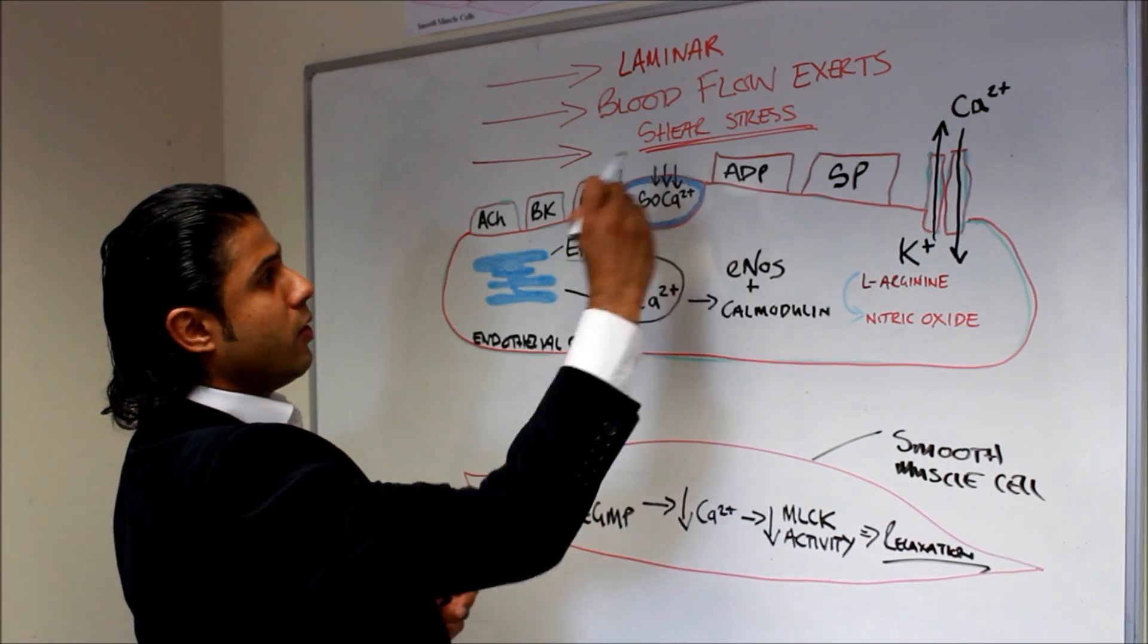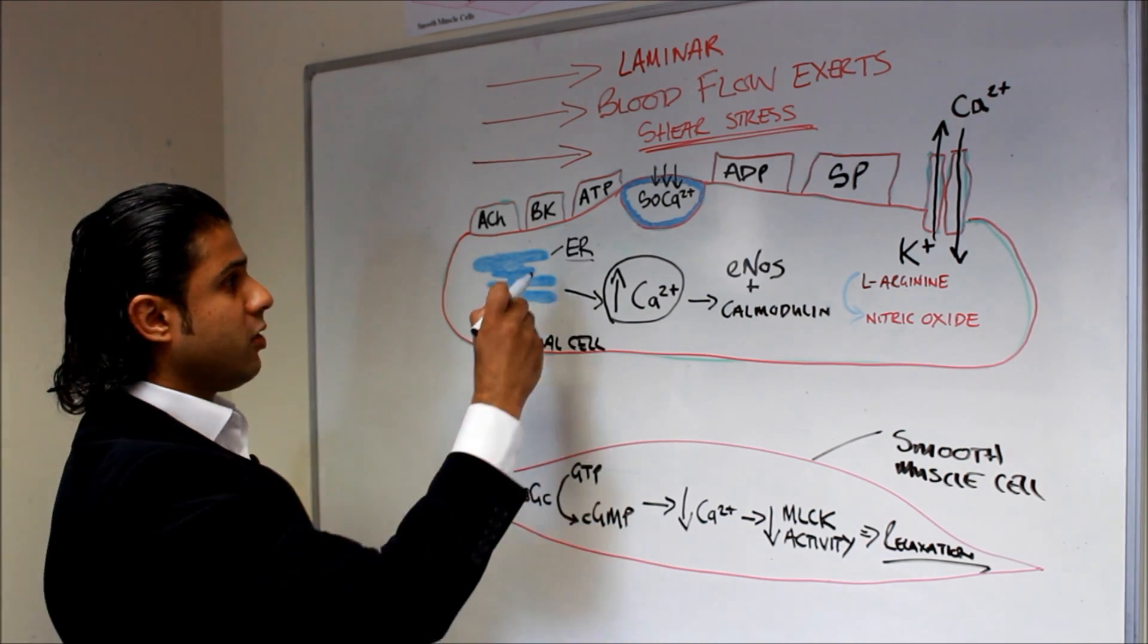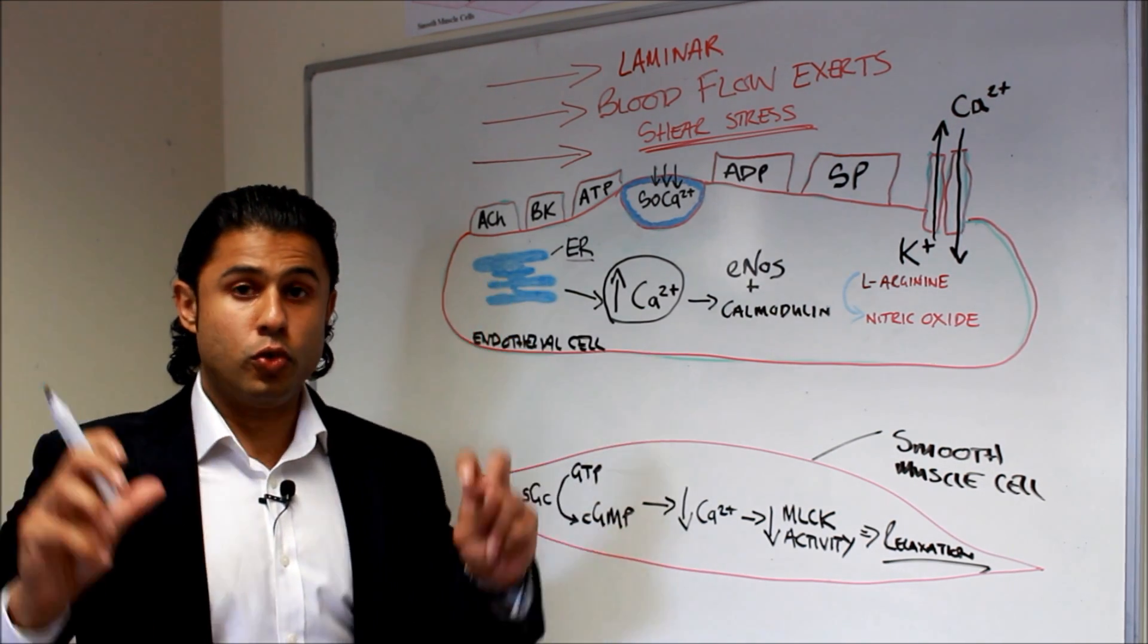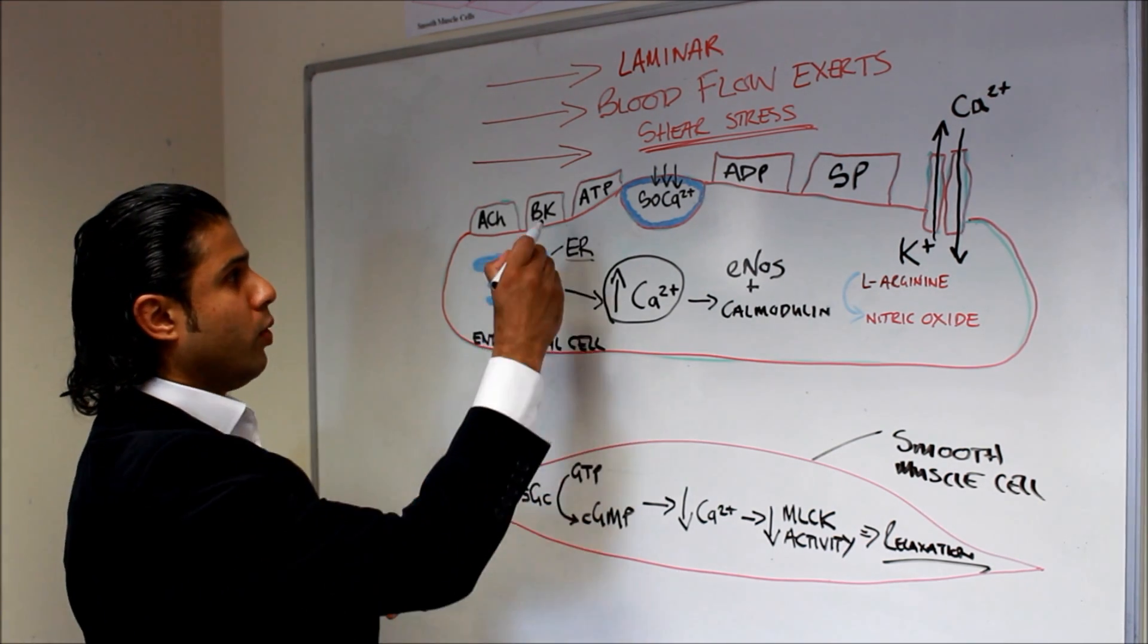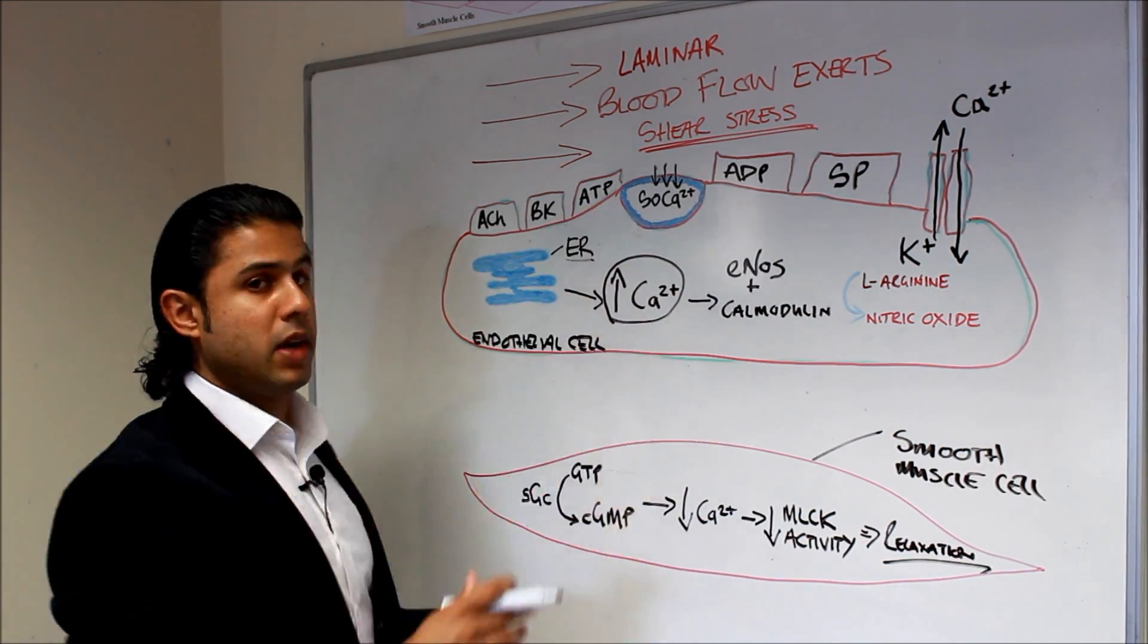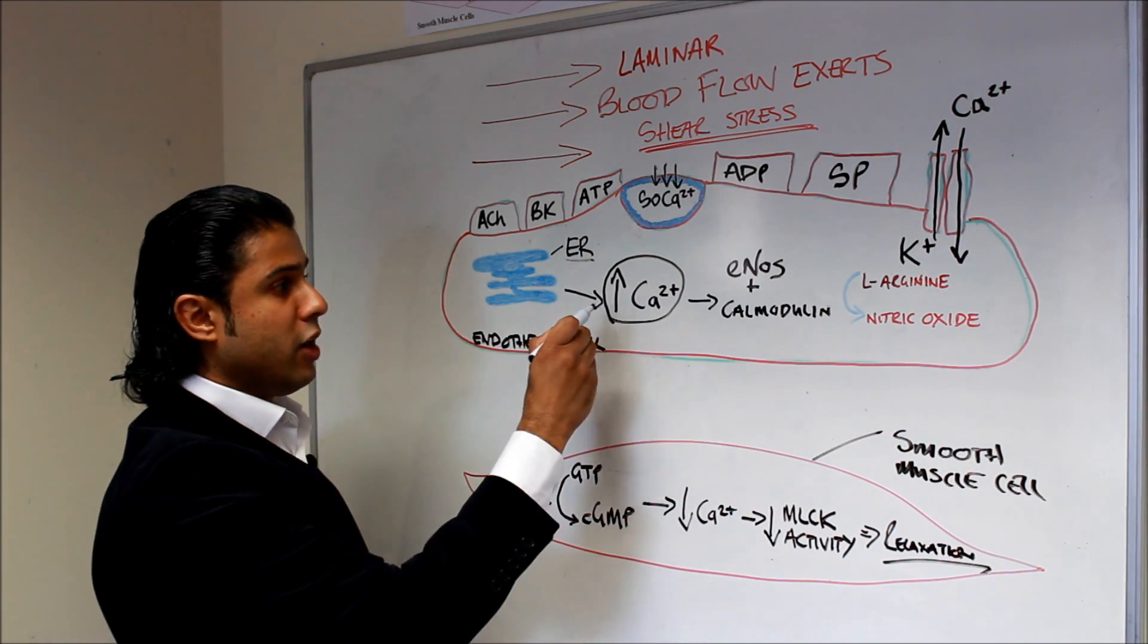So that's one way in which we're increasing the calcium. Now the endoplasmic reticulum is like the store of calcium within the endothelial cell. And the idea is that once these receptors are stimulated by the agonists, they act upon the endoplasmic reticulum, increase calcium.